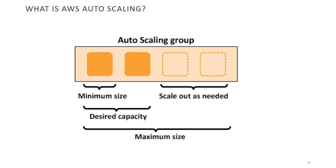What is AWS Autoscaling? AWS Autoscaling is a service that allows you to automatically scale your AWS resources up or down in response to changes in demand. You can use Autoscaling to ensure that your applications have the right amount of compute capacity at all times and to avoid over-provisioning or under-provisioning your resources.